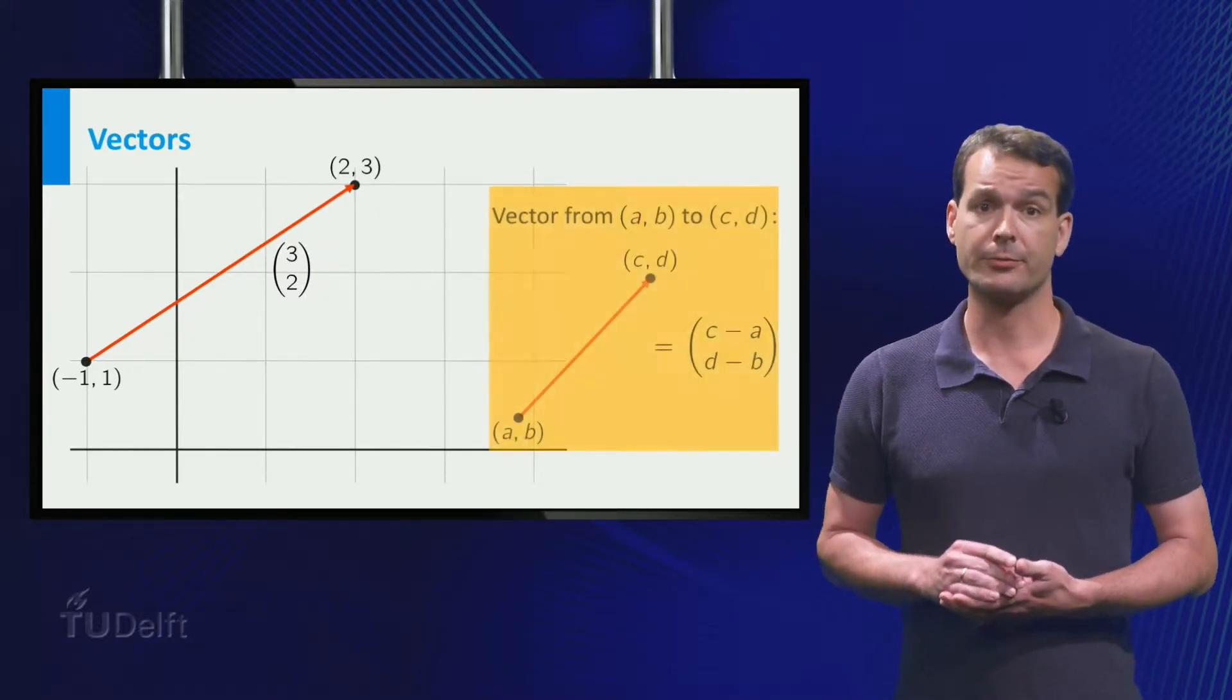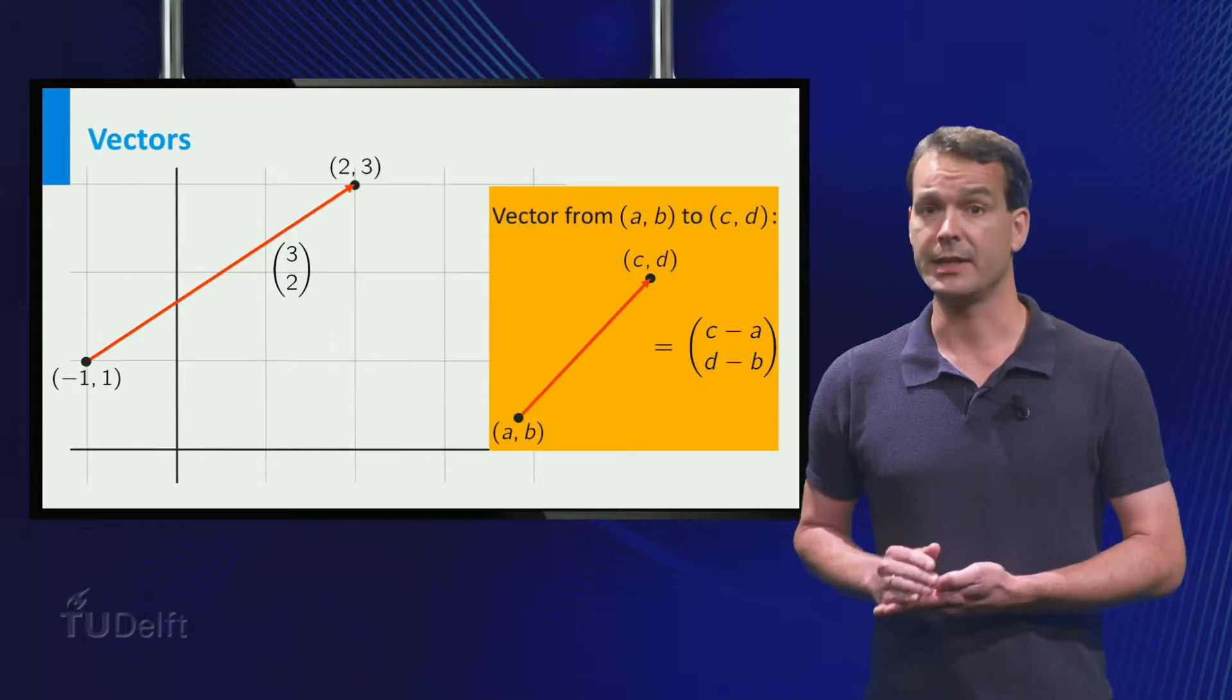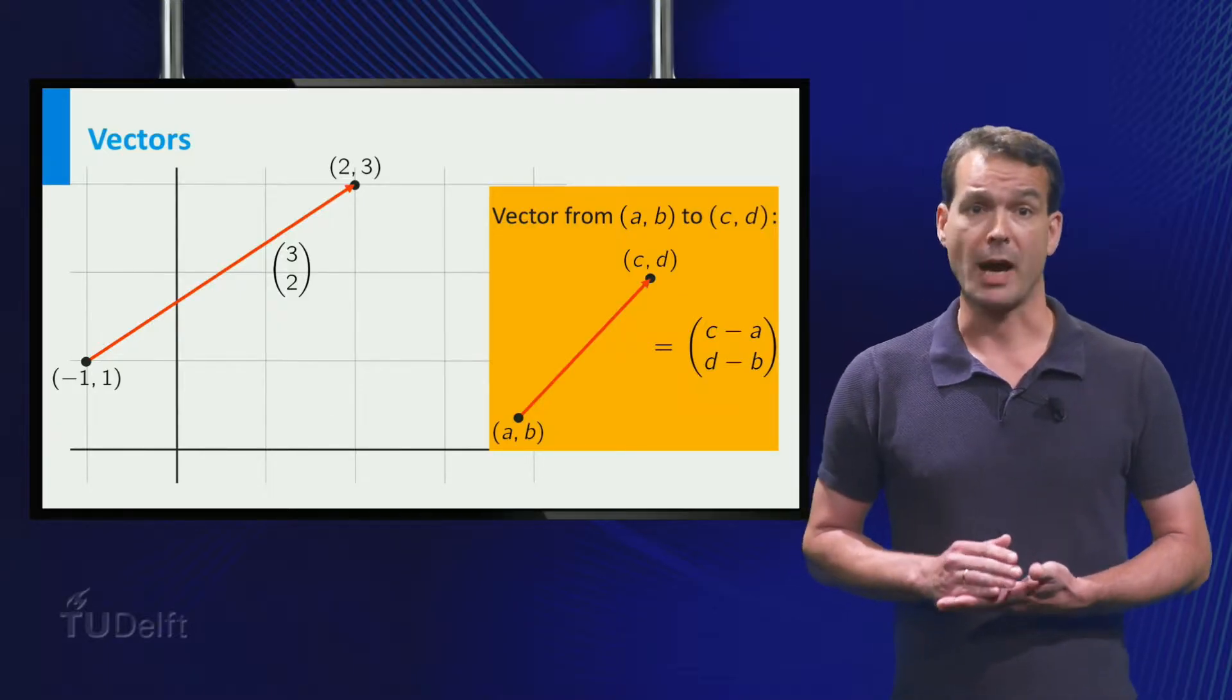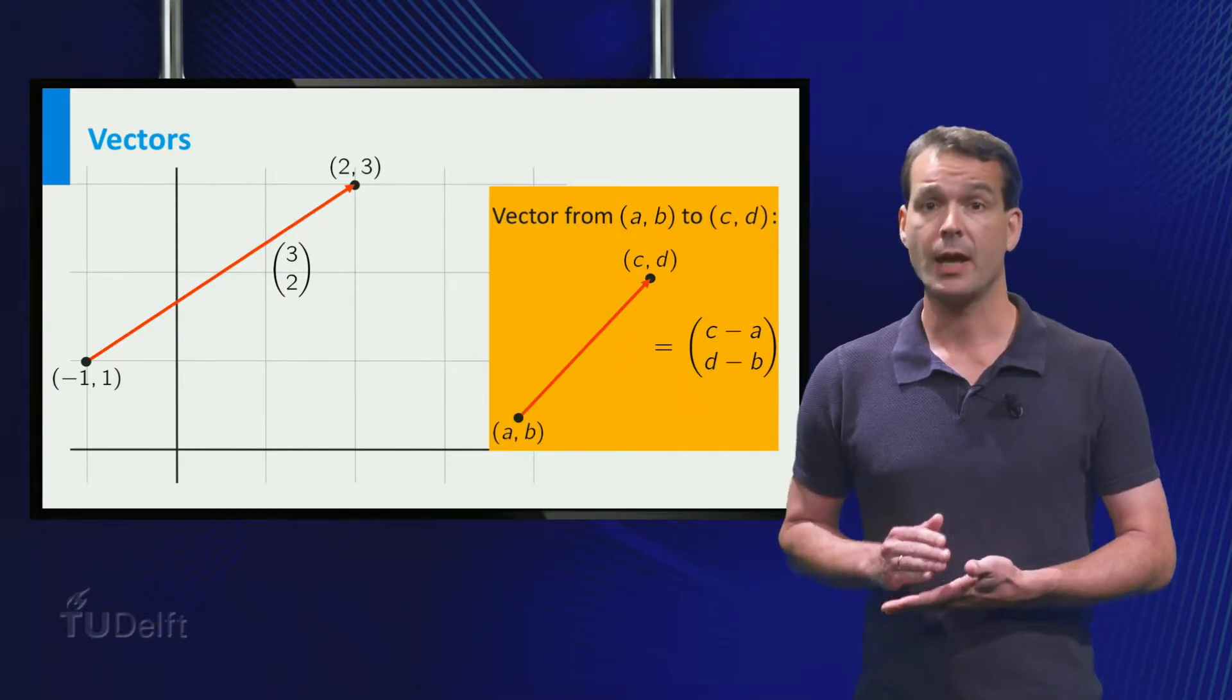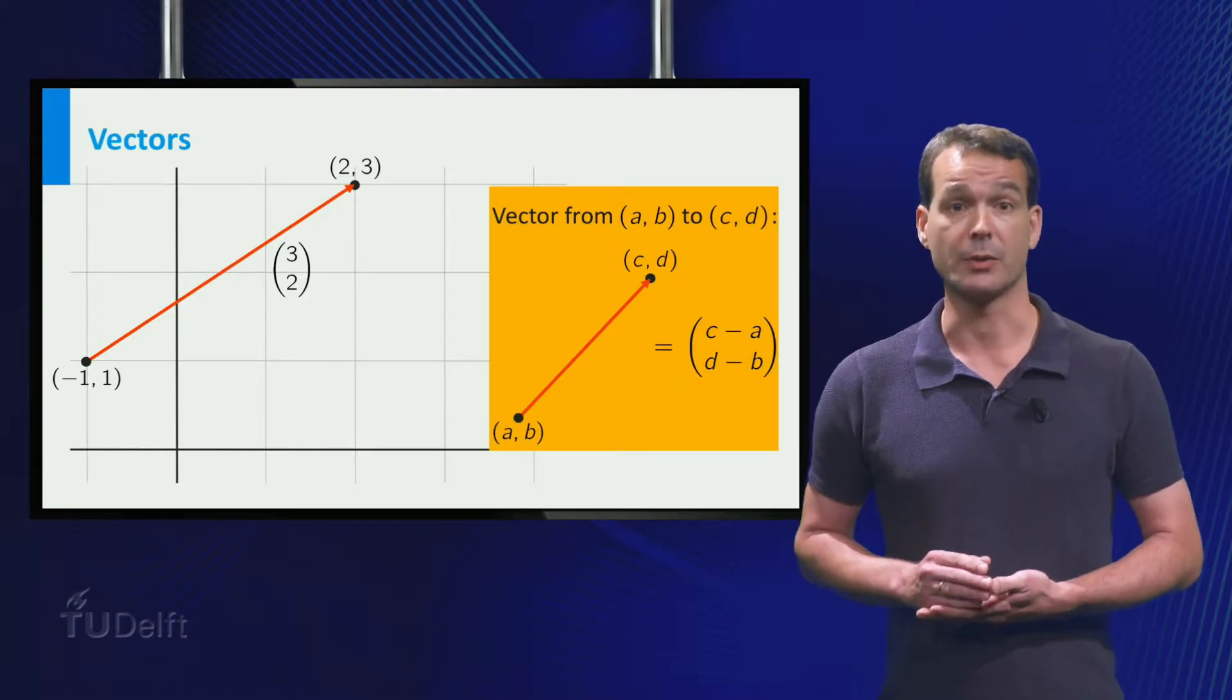In general, a vector from the point to is the vector with as a first component and as a second component.